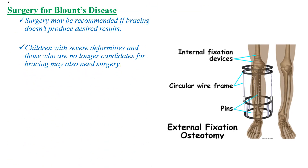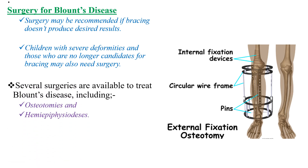The other treatment option is surgery. Surgery for Blount's disease is recommended if bracing doesn't produce desired results, and children with severe deformities or those who are no longer candidates for bracing might also need surgery. There are different types of surgeries, but the most common ones are osteotomy and hemi-epiphysiodesis.